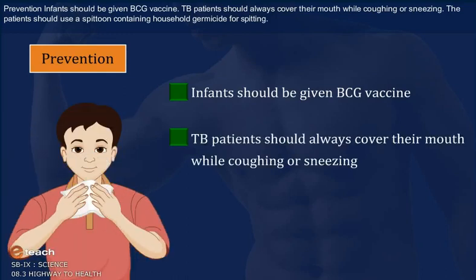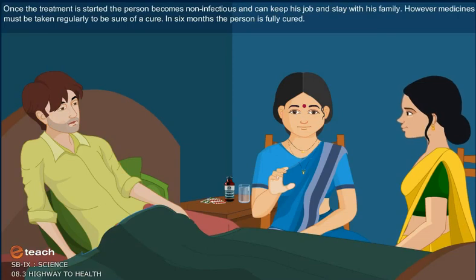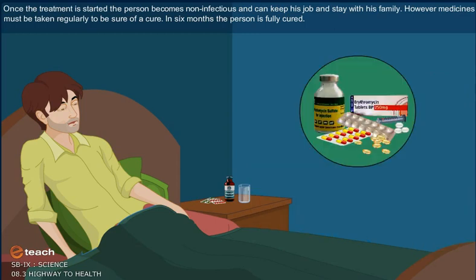TB patients should always cover their mouth while coughing or sneezing. The patient should use a spittoon containing household germicide for spitting. Once the treatment is started, the person becomes non-infectious and can keep their job and stay with their family. However, medicines must be taken regularly to ensure a cure. In 6 months, the person is fully cured.